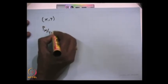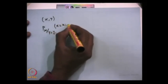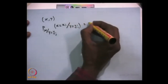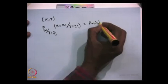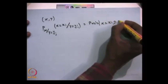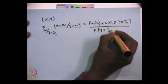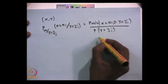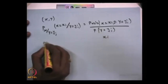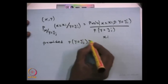The probability that X takes a value Xi given that Y takes a value Yj is the probability that X equals Xi and Y equals Yj, divided by the probability that Y equals Yj. Here the running index is over all Xi for a fixed Yj, provided the probability that Y equals Yj is strictly greater than 0.